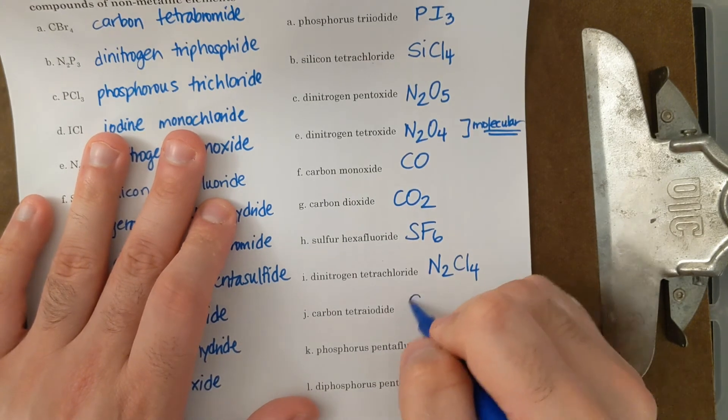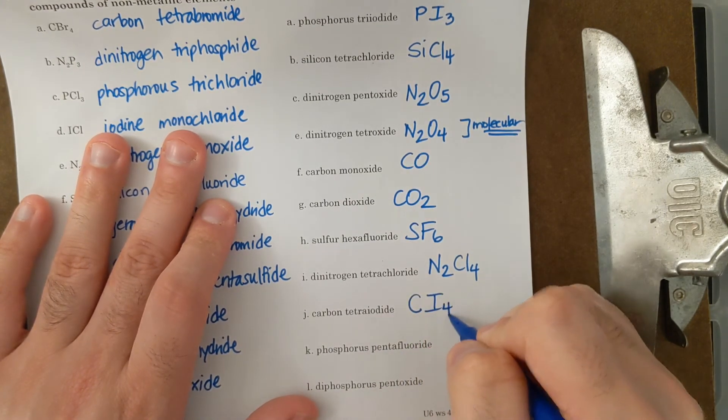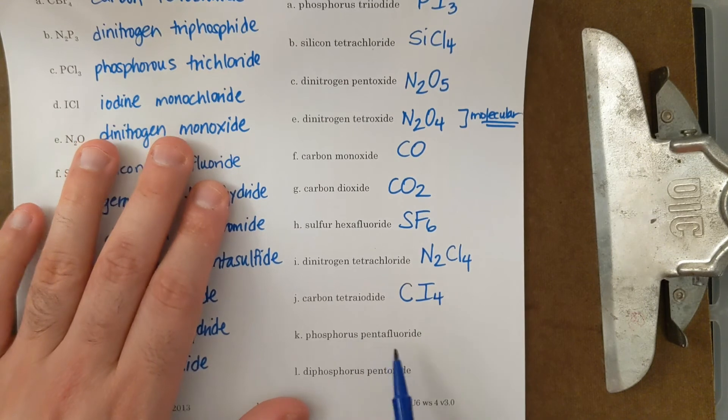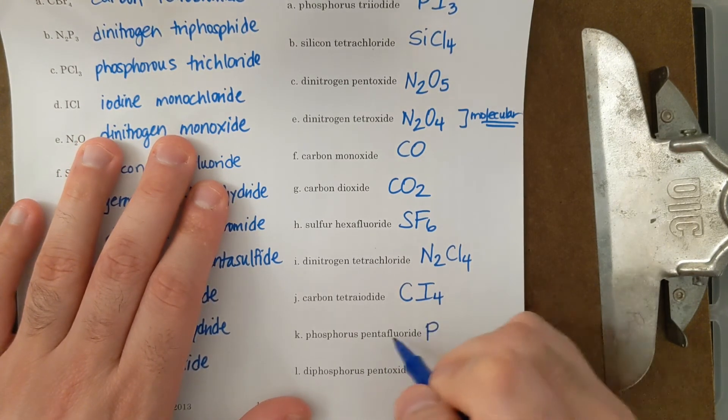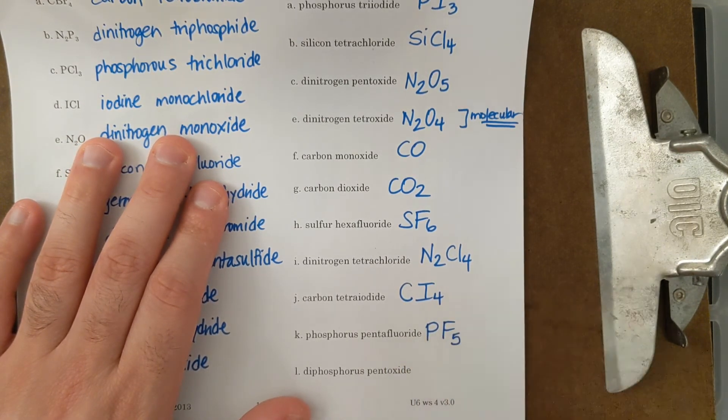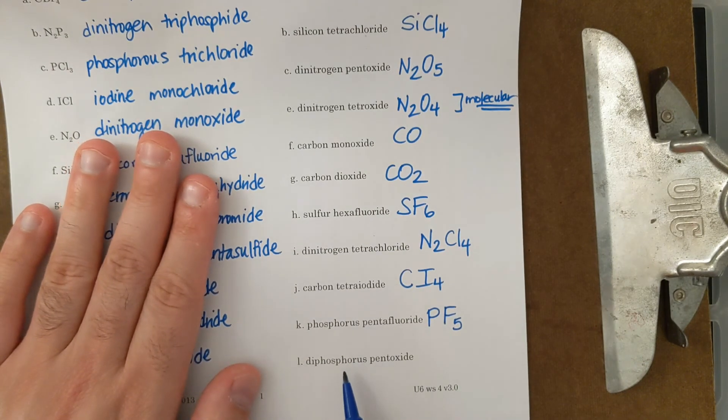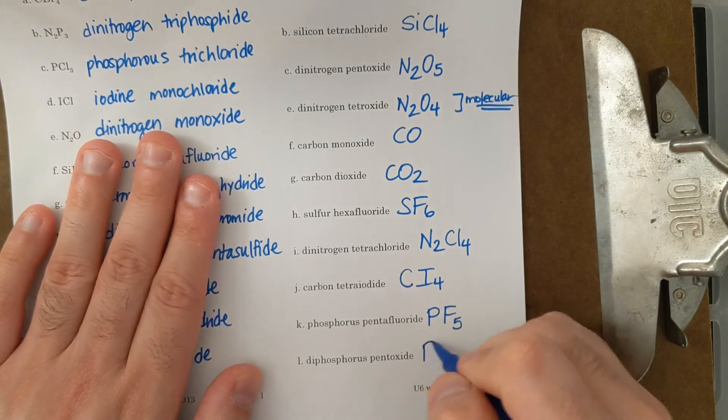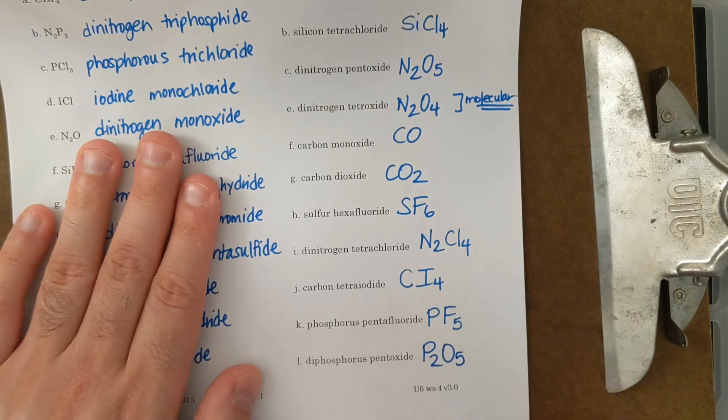Carbon tetraiodide, CI4. Phosphorus pentafluoride, PF5. And then finally, diphosphorus pentoxide, P2O5.